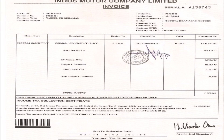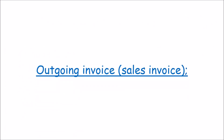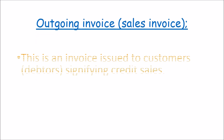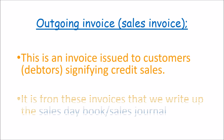In other words, an outgoing invoice, also known as a sales invoice, is an invoice issued to customers — in this case debtors — signifying credit sales. It is from these invoices that we write up the sales debt book, which is also known as the sales journal. The sales journal is a book of prime entry, and we shall talk about it in a later session.